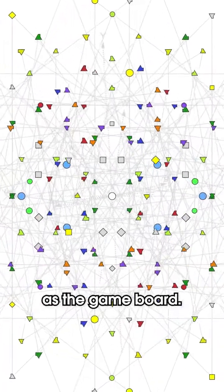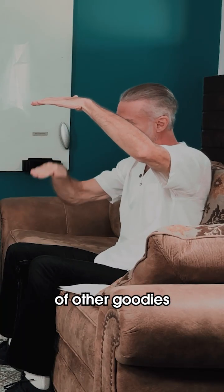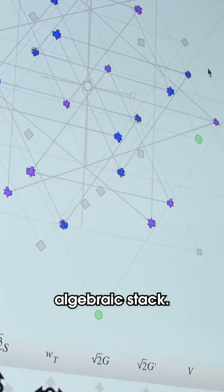We start with that as the game board. When you take that, you're getting a lot of other goodies along with it. It's called an algebraic stack.